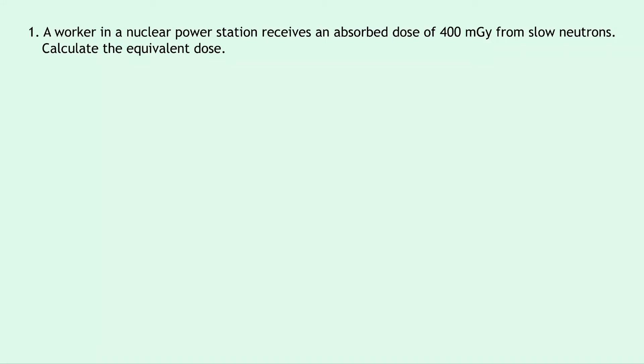Question one says that a worker in a nuclear power station receives an absorbed dose of 400 milligrays from slow neutrons. Calculate the equivalent dose.